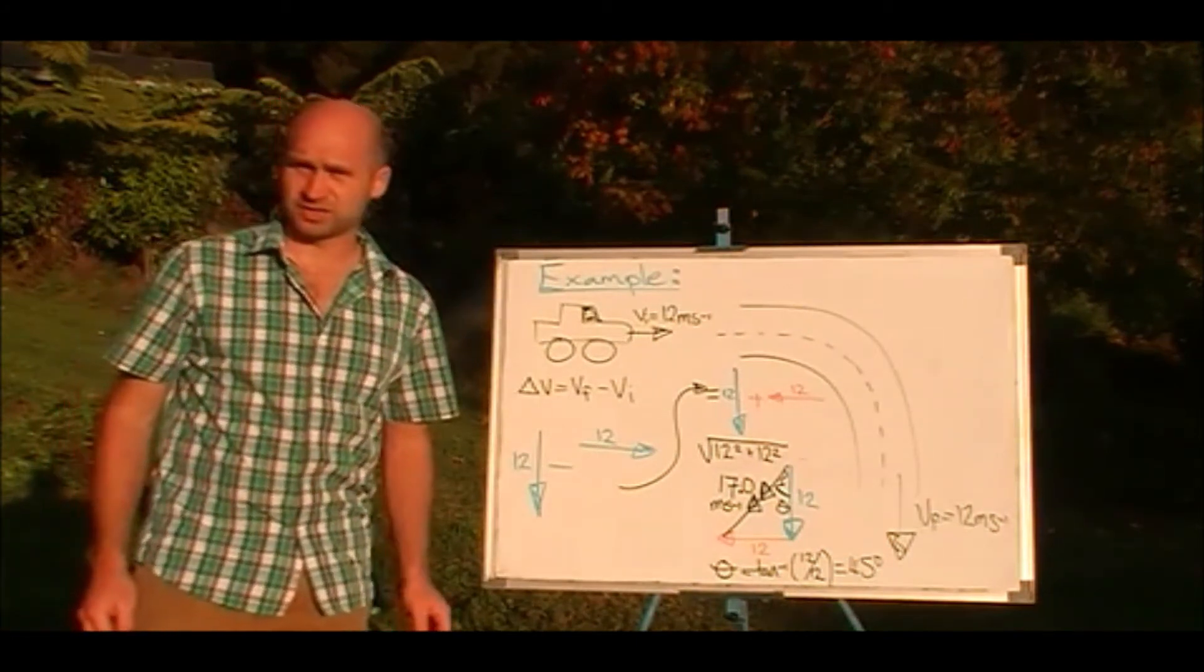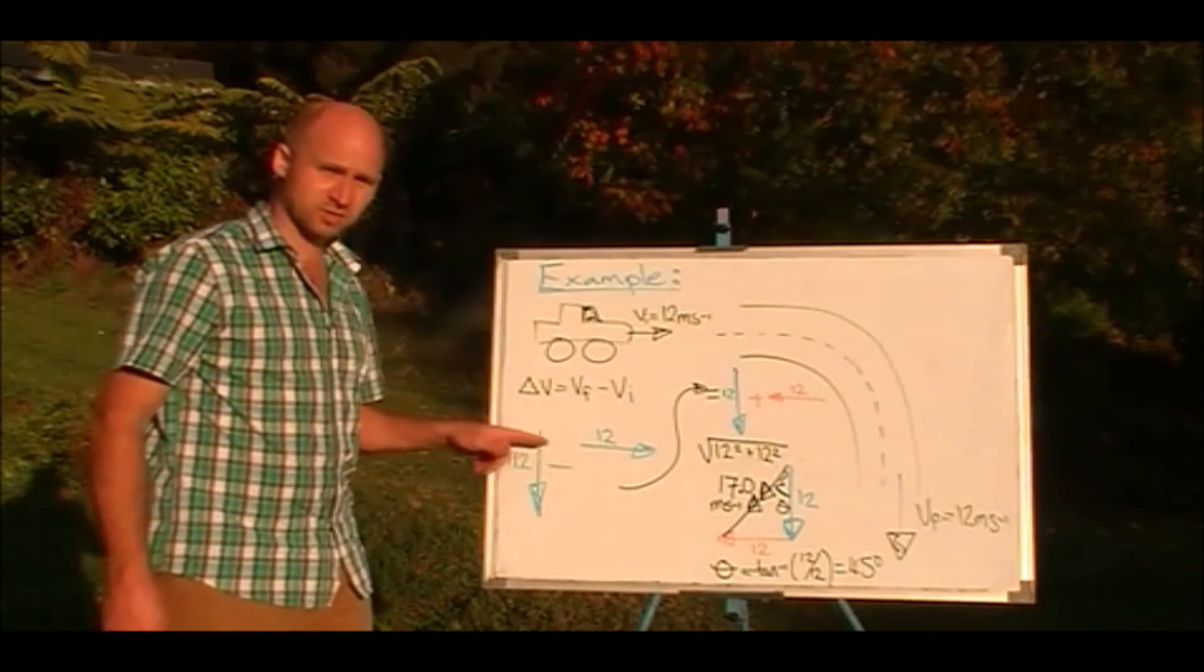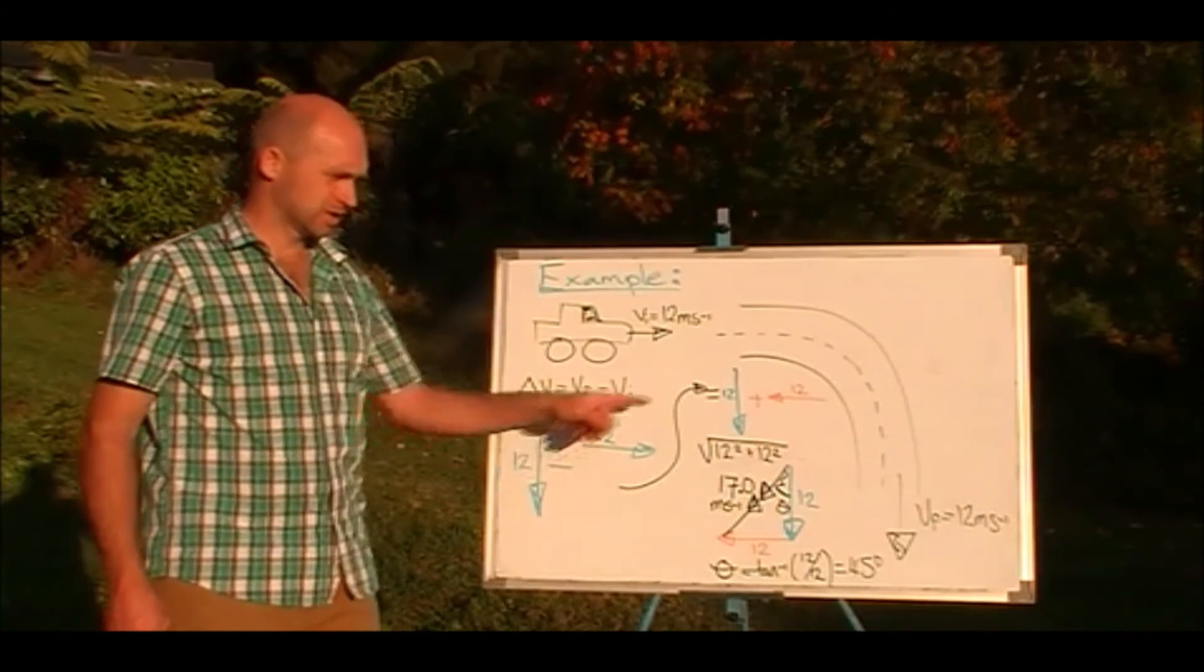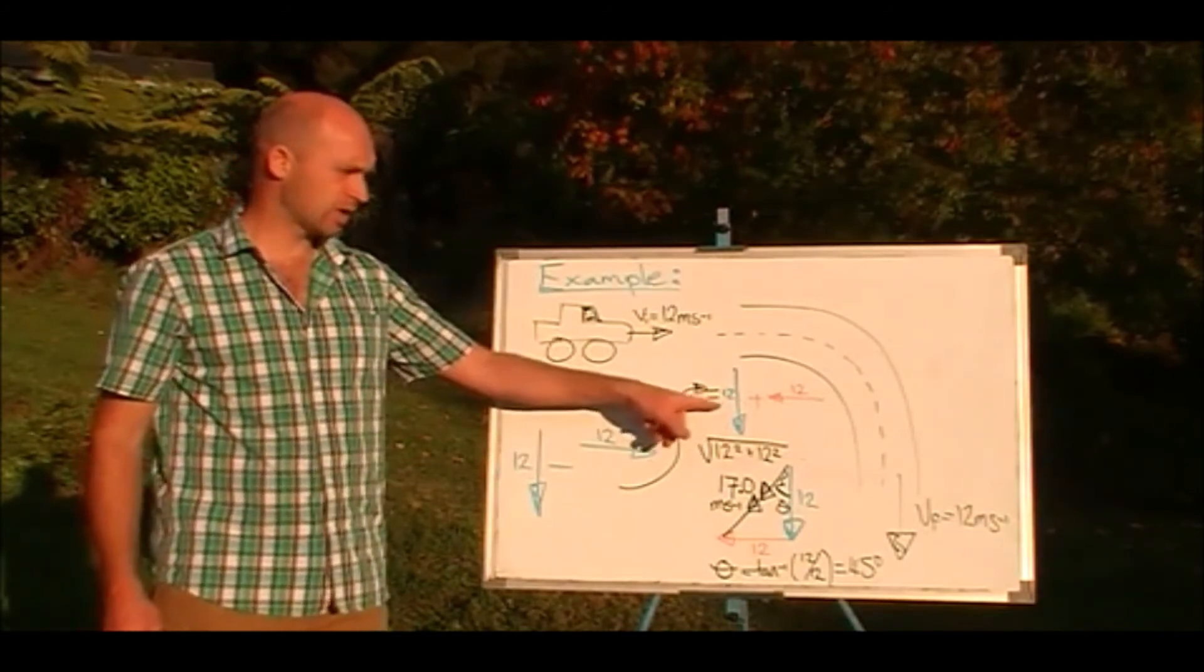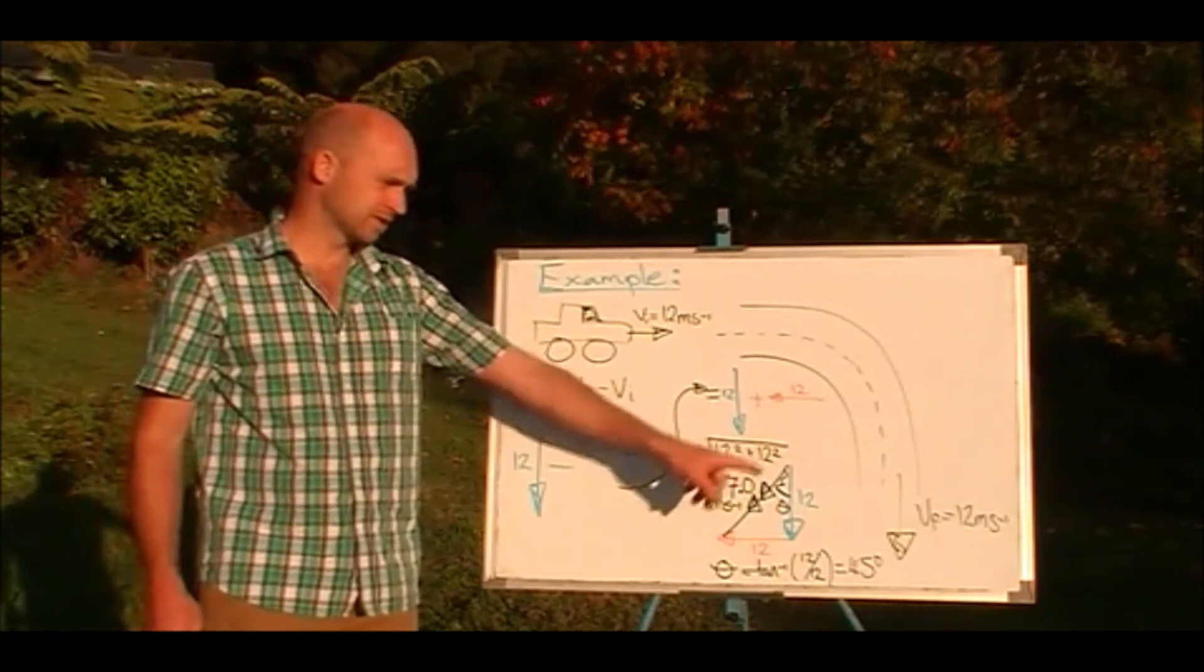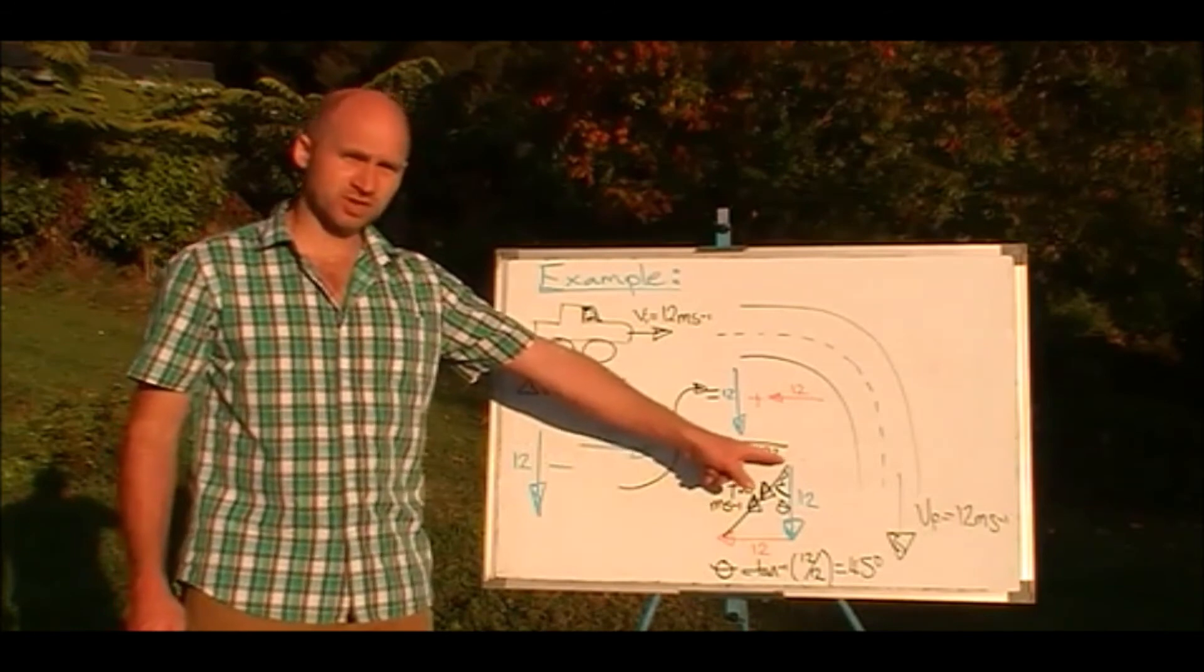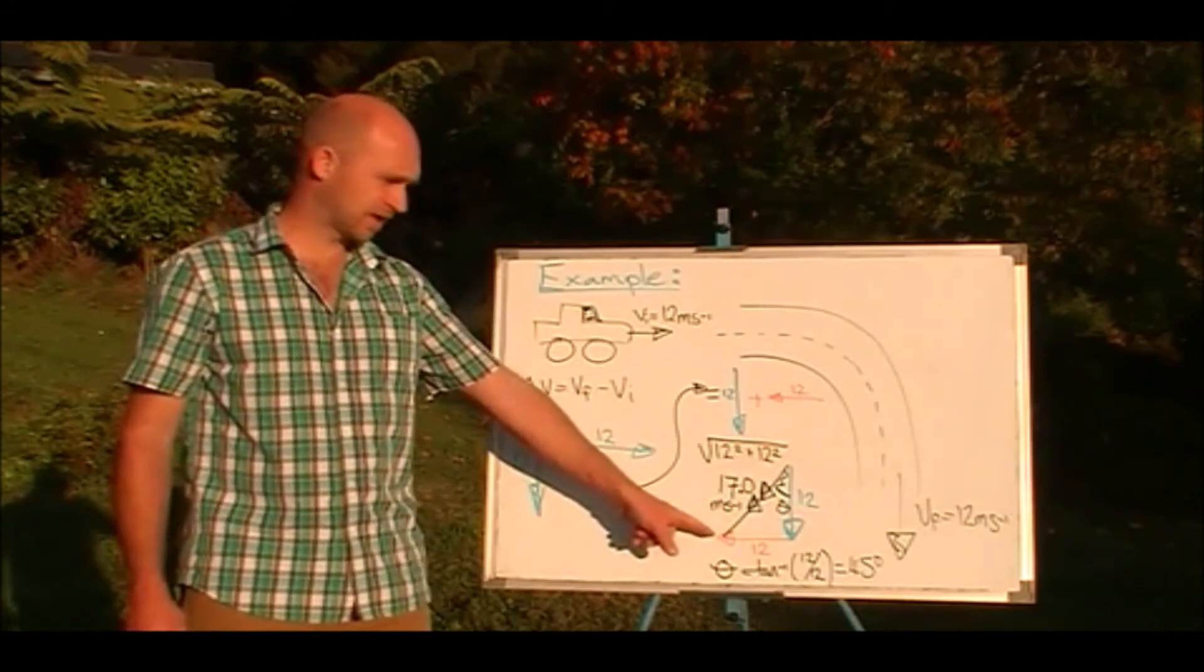Okay, so hopefully you got something like this. First step, final minus initial: 12 down minus 12 to the right. Turn that second one the other way around and change it to a plus. 12 plus 12 to the left. Draw them nose to tail and draw on the resultant from the start of the first one to the end of the last one. Like that.